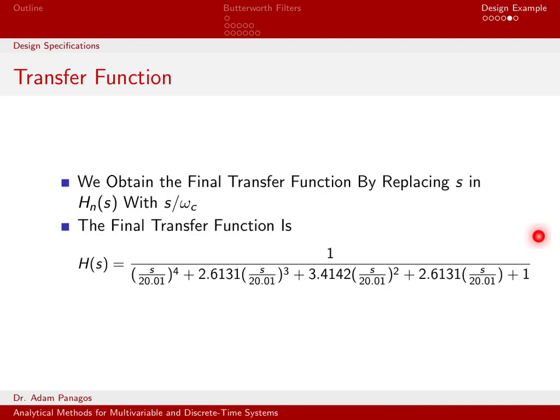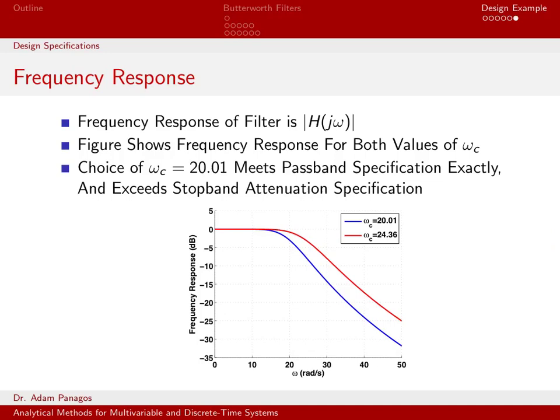So let's go ahead and take a look at what this filter looks like in the frequency domain. In this plot, I've actually plotted the amplitude response of the filter. And I actually plotted it for both values of omega c. If you remember a minute ago, we saw that because we had to round the filter order to an integer, we couldn't meet the stopband specifications and the passband specifications exactly. And depending on which omega c we wanted, we could meet one exactly but not the other and vice versa.